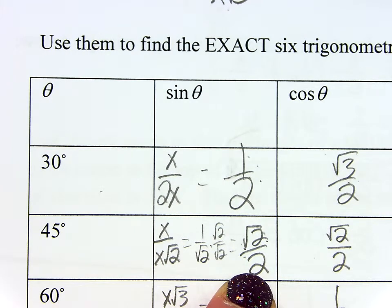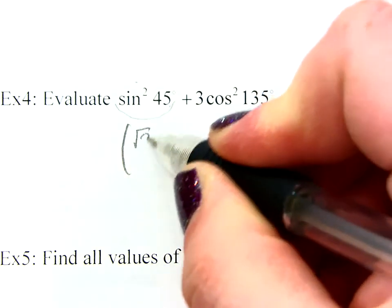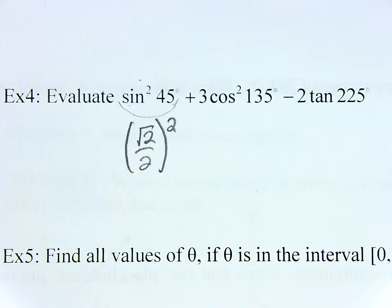Yeah, the sine of 45 is just root 2 over 2. So this first chunk is just root 2 over 2, but I do need to square that whole thing. When you square something like that, you square the top and the bottom. So 2 over 4, so a half.